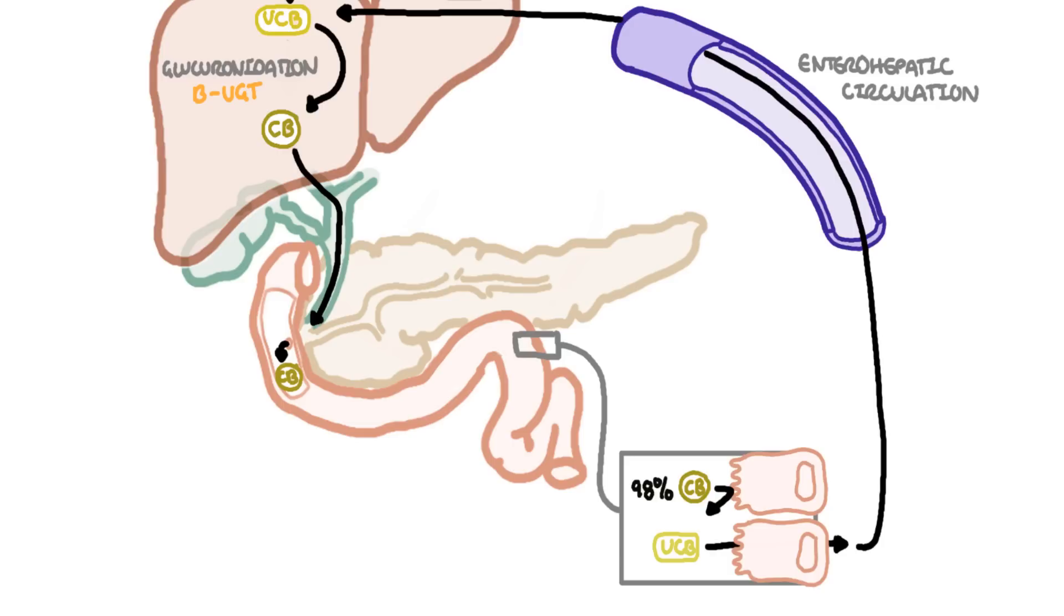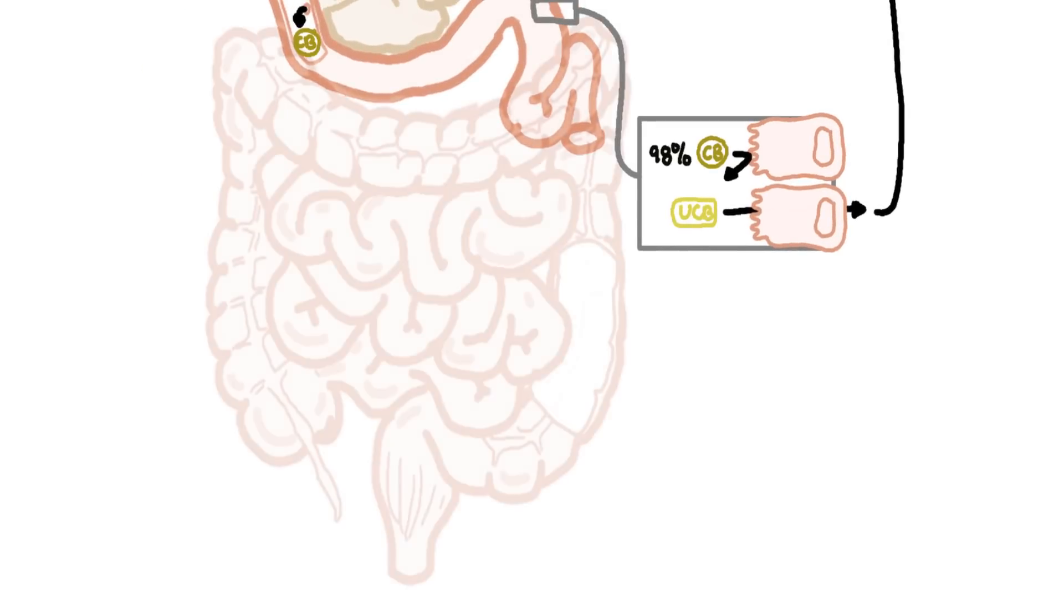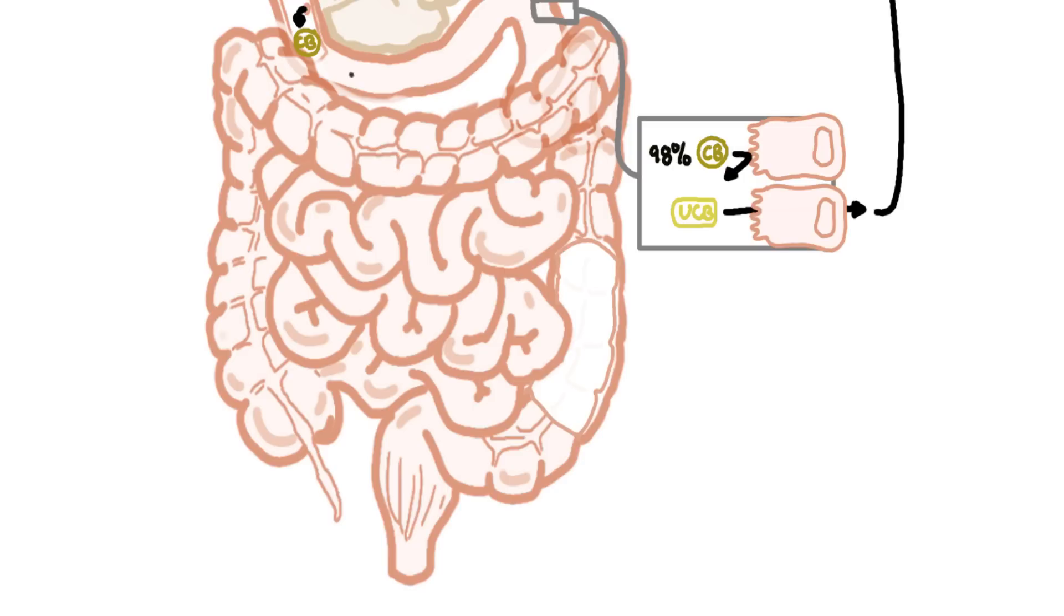Going back to the conjugated bilirubin, it continues traveling to the large intestine where it is exposed to bacteria. Here the bilirubin is reduced by bacterial enzymes to a series of molecules termed urobilinogens.